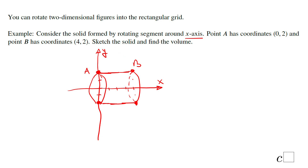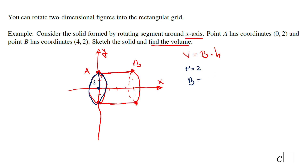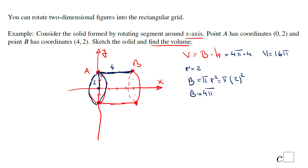We need to find the volume of this cylinder. The volume of a cylinder is the area of the base times the height. The base is a circle with radius 2 units, so the area of the base is π r² = π × 2² = 4π. The height of the cylinder is the length of the segment: 4 units. So the volume is 4π × 4 = 16π cubic units.